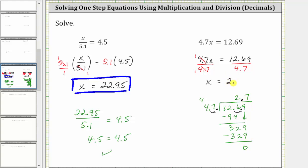X equals 2.7 is the solution to the equation. Once again, this means if we substitute 2.7 for x back into the original equation, it will satisfy the equation or make the equation true. And let's go ahead and check this.